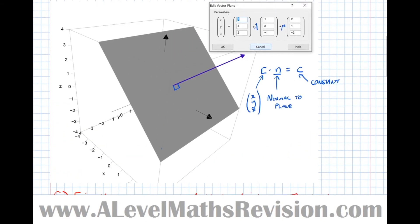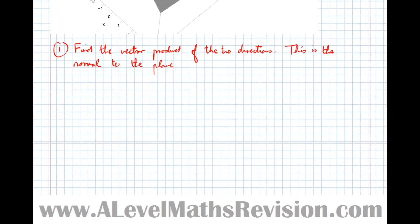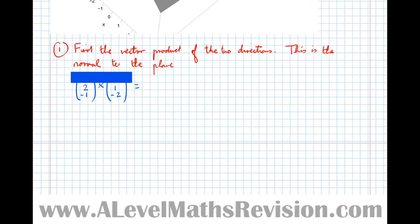Step one: find the vector product of the two directions — this gives the normal to the plane. So we compute (1, 2, −1) × (2, 1, −2). Using the cover-up method: cover the first entry, find the determinant of what's left: (2×−2) − (−1×1) = −4 − (−1) = −3.